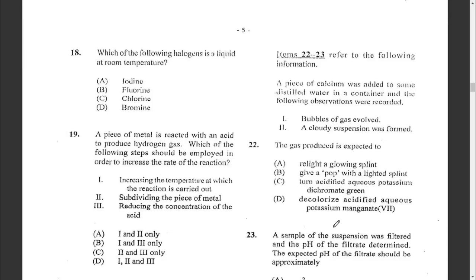Question eighteen: which of the following halogens is a liquid at room temperature? Bromine is the halogen that is a liquid at room temperature. Iodine is a solid, and fluorine and chlorine are both gases.